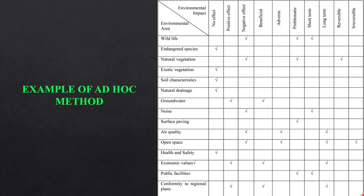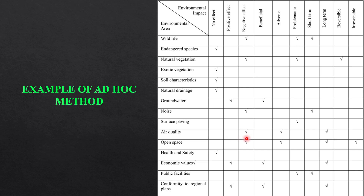Here is an example of the ad hoc method. The broad environmental areas are listed, and the nature of impacts is shown in terms of positive, negative, and adverse. For the broad environmental area, you simply put a tick mark indicating which classification is applicable. So in the case of air quality, the tick mark shows a negative effect, and it is an adverse effect in the long term. Accordingly, you tick mark against each environmental impact — this is the qualitative approach.